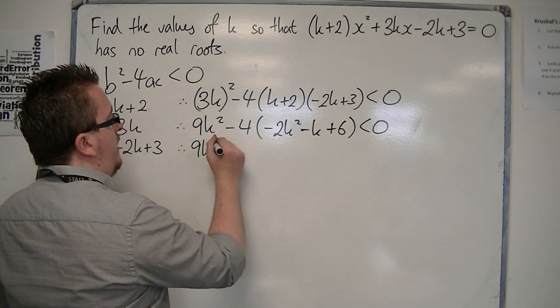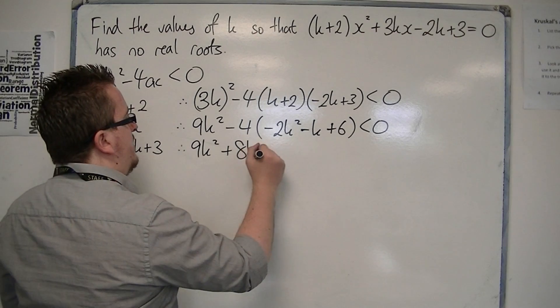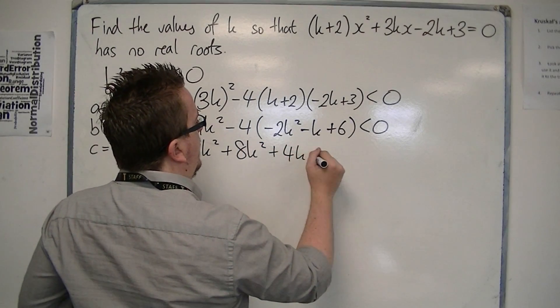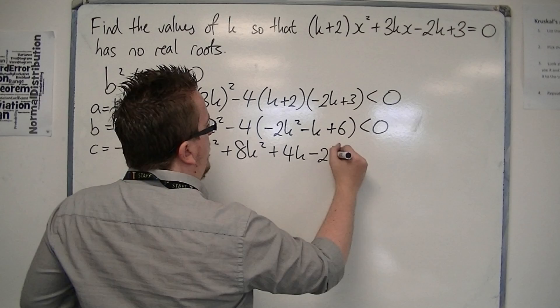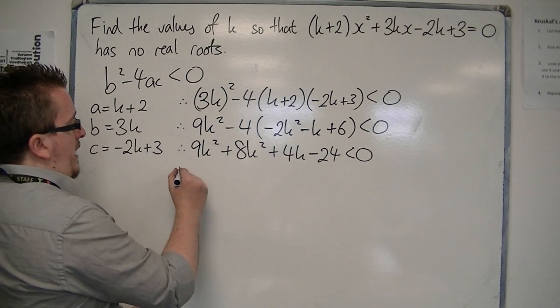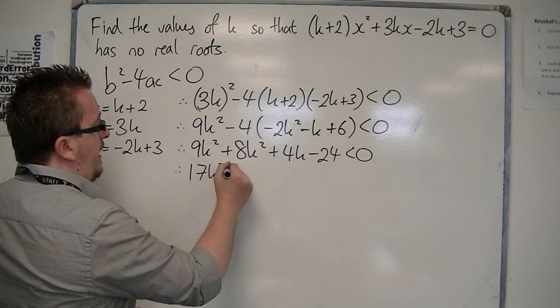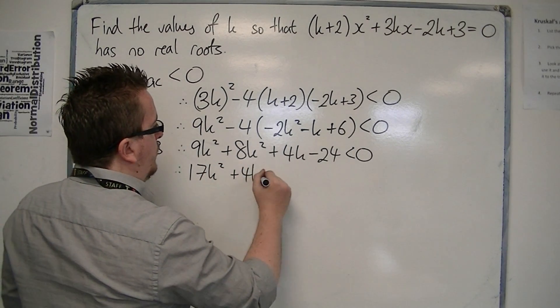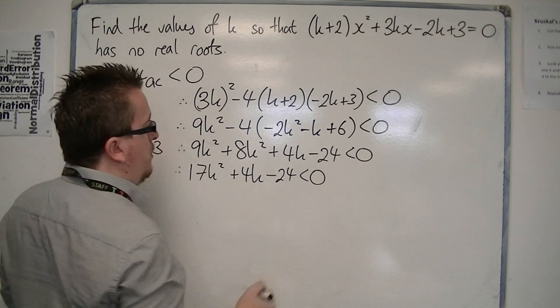So if I tidy that up, we've got 9k² plus 8k² plus 4k minus 24 is less than 0. So we have 17k² plus 4k minus 24 is less than 0.